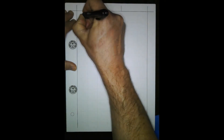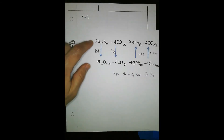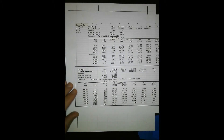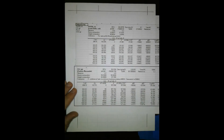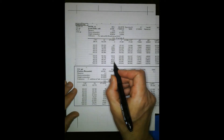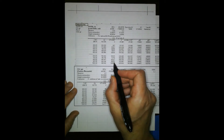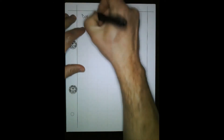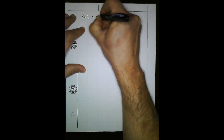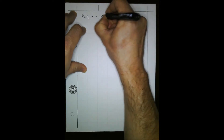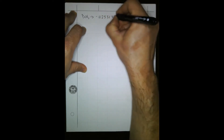Delta H1 is cooling lead oxide from 900 K to 298 K. I have the table here and you have the digital version. The sensible heat is 112,531 joules per mole. And we're cooling it, so Delta H1 is negative 112,531 joules per mole.